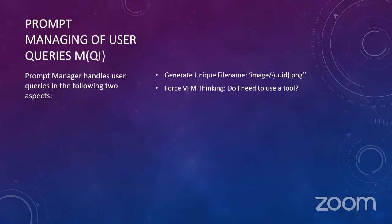Here we have prompt managing for user queries. This is based on two aspects. The first is generating a unique file name — once the model receives an input from a user query, it establishes a name and unique identifier to perform the following task. The second uses a prompt to force the VFM to think: 'Do I need to use a tool?' If yes, it will call a VFM; if not, it will produce the final answer.